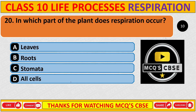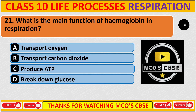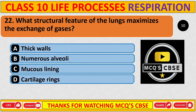Question 20: In which part of the plant does respiration occur? Correct answer is D: All cells. Question 21: What is the main function of hemoglobin in respiration? Correct answer is A: Transport oxygen. Question 22: What structural feature of the lungs maximizes the exchange of gases? Correct answer is B: Numerous alveoli.